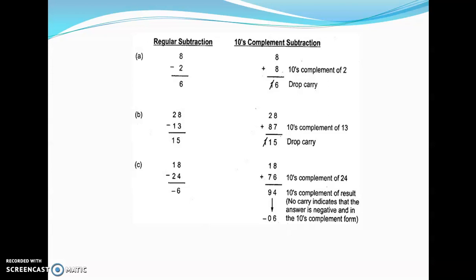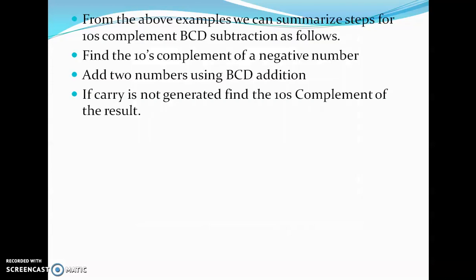In example C, 18 minus 24: since 24 is larger in magnitude than 18, the regular subtraction method gives minus 6. Using 10's complement subtraction, since the number of digits in 24 is 2, we subtract from 100. 100 minus 24 yields 76. Adding 76 to 18 gives 94. There is no additional carry, which indicates the answer is negative. We calculate the 10's complement of 94, which is 6, and place a negative sign in front of it. To summarize: find the 10's complement of the subtrahend, add the two numbers using BCD addition, and if no carry is generated, find the 10's complement of the result.